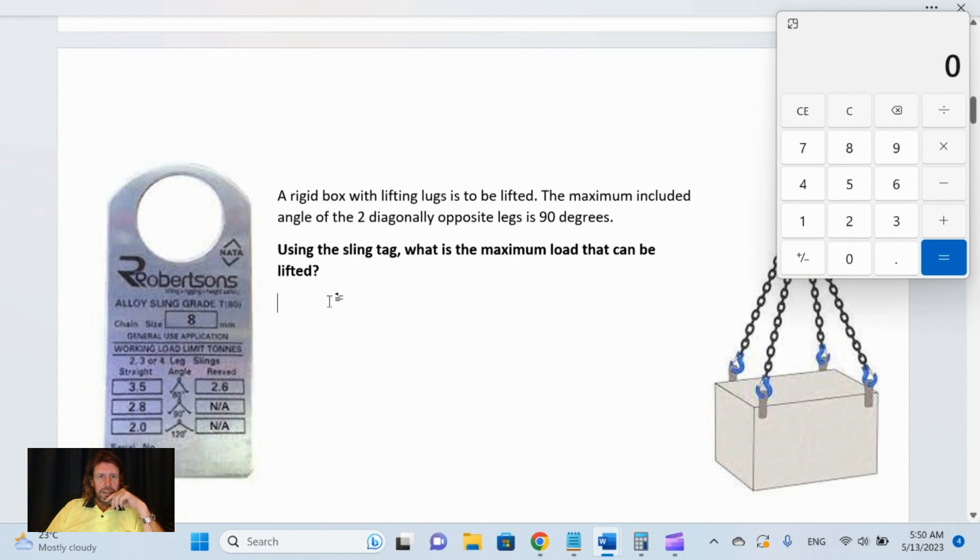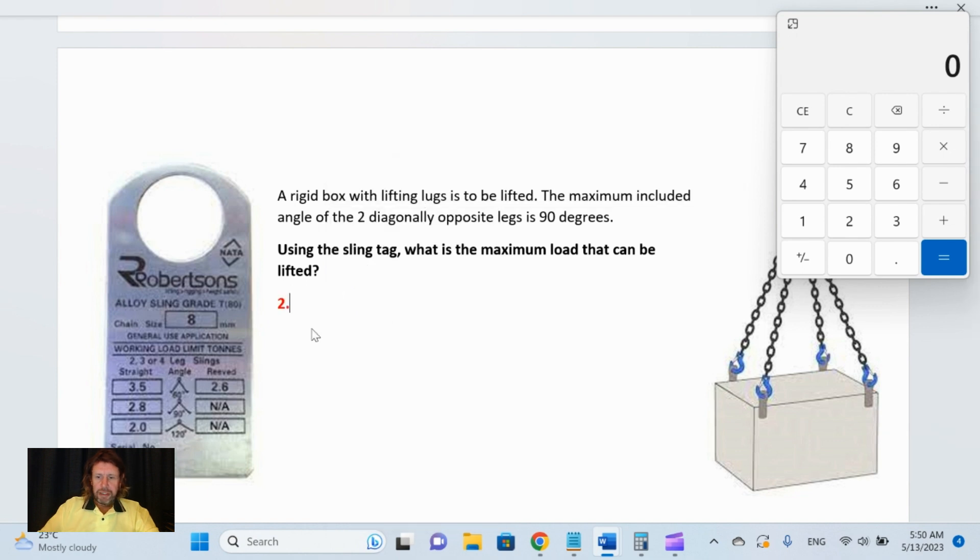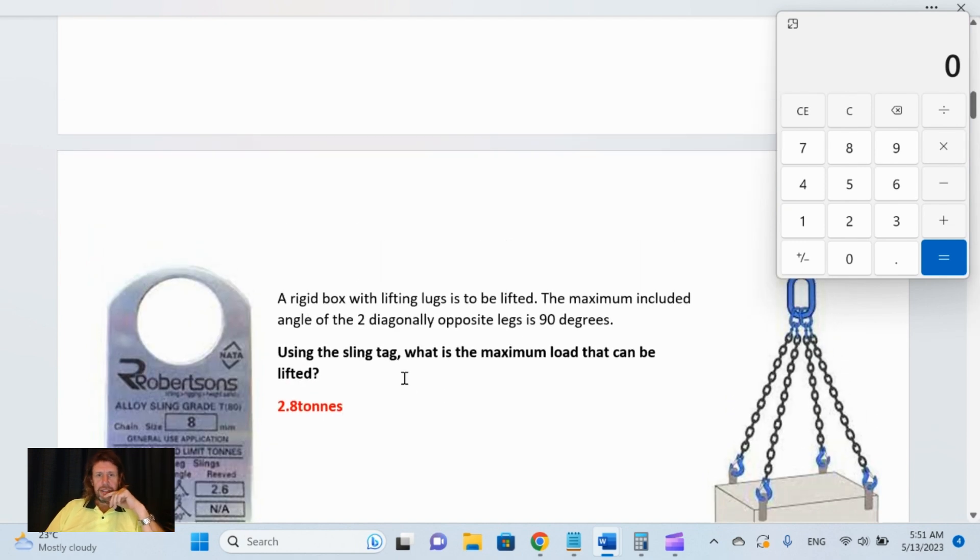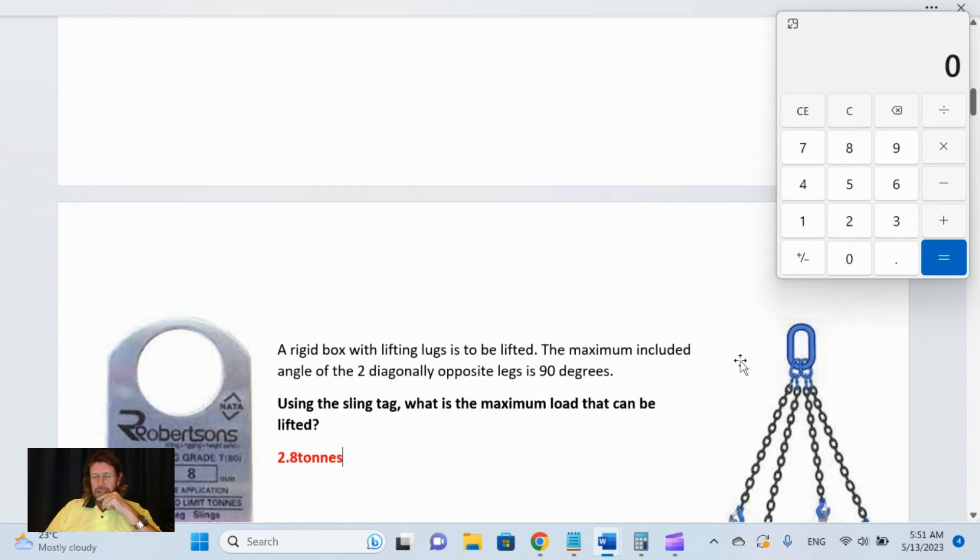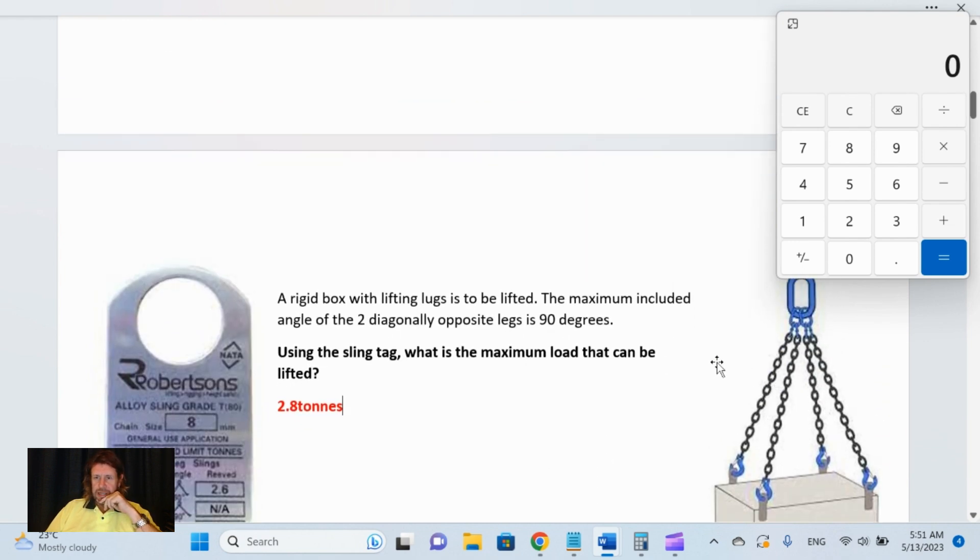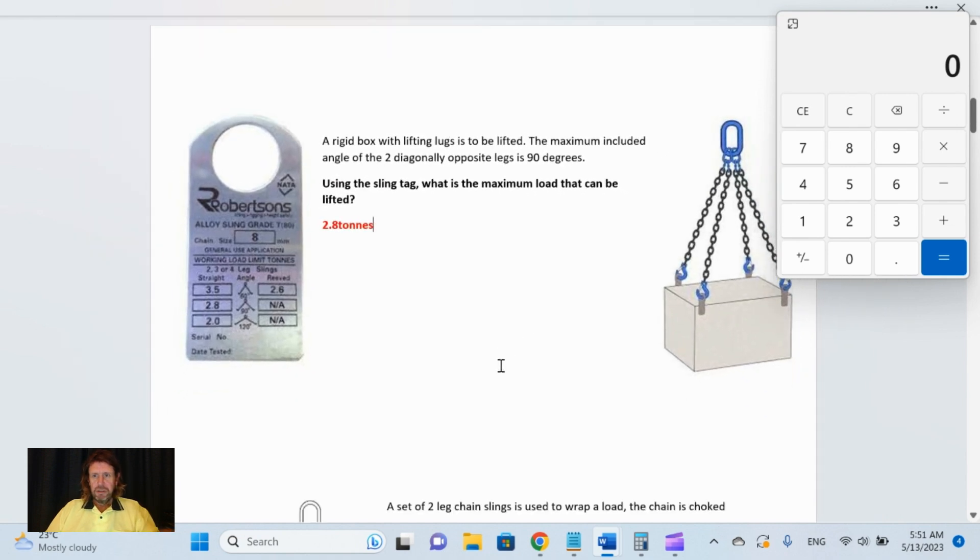The size that we require is 2.8 tons. What is the maximum load that can be lifted? It's 2.8 tons in that configuration. That's what the sling tag is telling us.